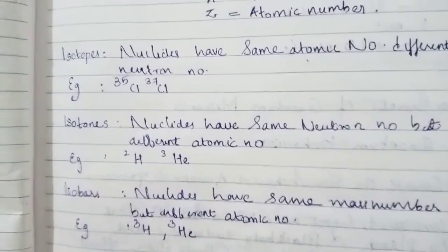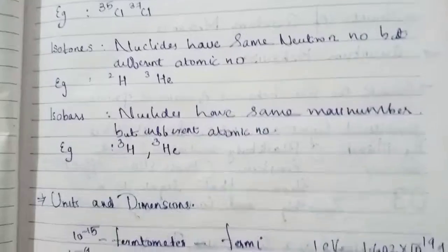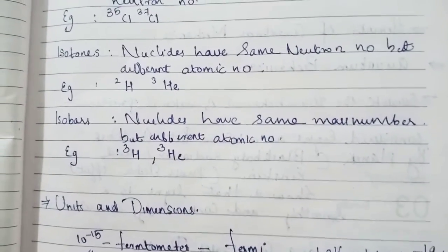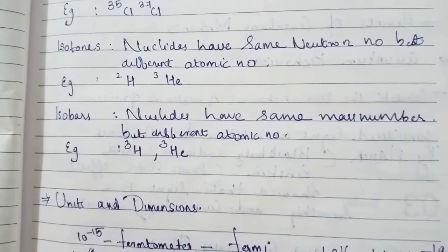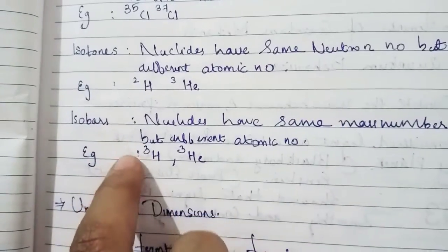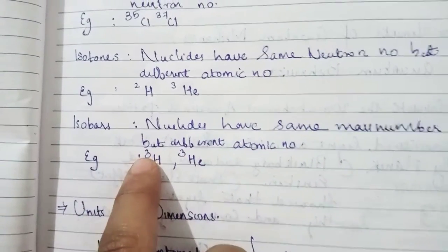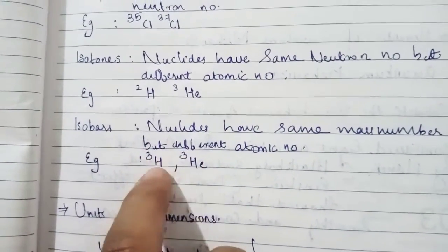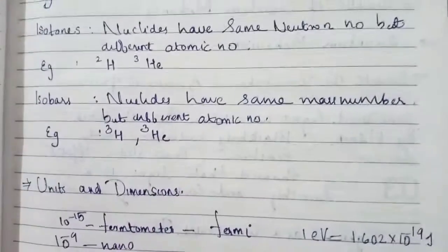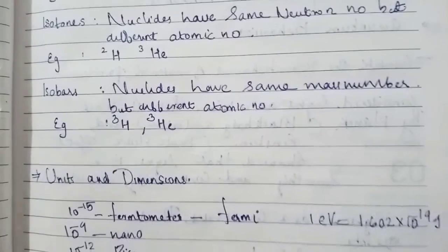Next, isobars. Isobars are nuclides that have the same mass number but different atomic number, such as hydrogen-3 and helium-3. Here the mass number is the same but the atomic number is different for hydrogen and helium. These are the isobars.